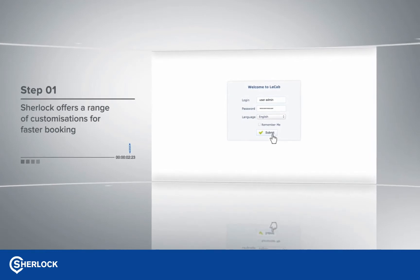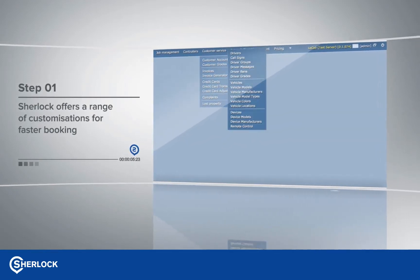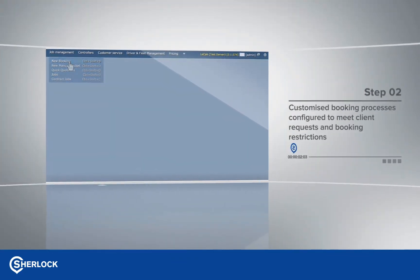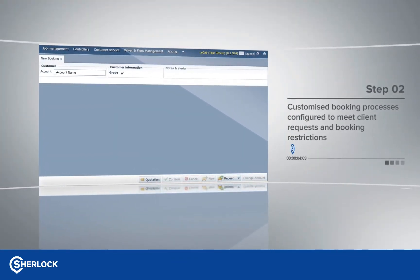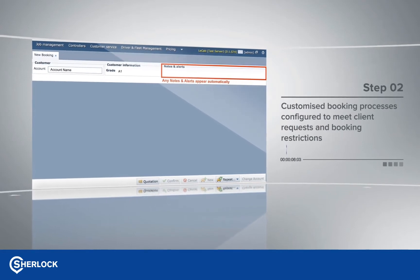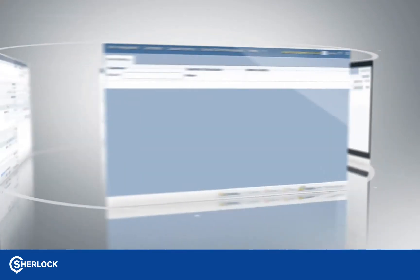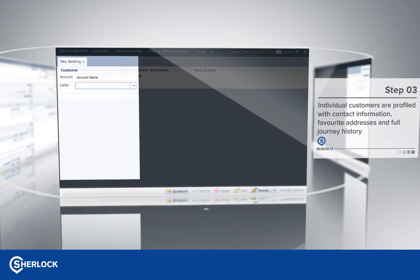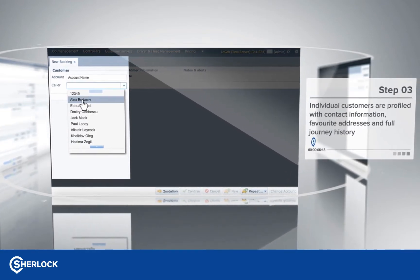Log in to take a booking. The booking screen is customisable to enable quick and accurate bookings and dispatch. Under the job management screen, click to enter a new booking. Relevant customer profiles, notes and alerts are associated to account names. Customers are profiled based on their saved favourite addresses and journey history.